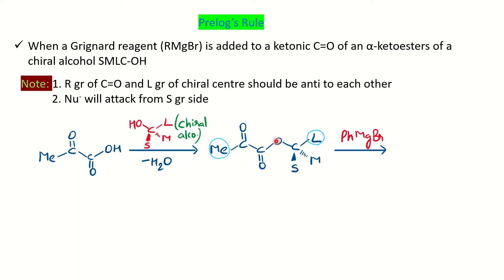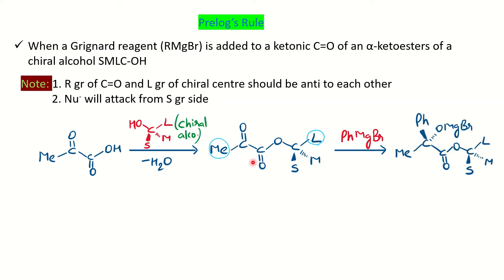Since the mesomeric effect is more powerful than the inductive effect, the ester carbonyl carbon is more stable due to resonance. Therefore, the ketonic carbon is more electrophilic and is the reactive site. The nucleophile attacks the ketonic carbon, following the same stereochemistry as the small group — if the small group is on the wedge line, the nucleophile follows the same side, and the oxygen (MgBr) goes below the plane.